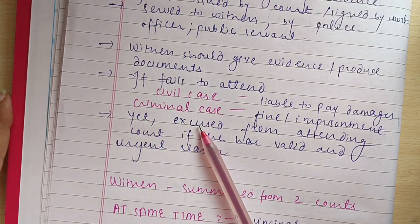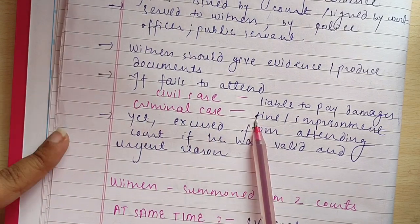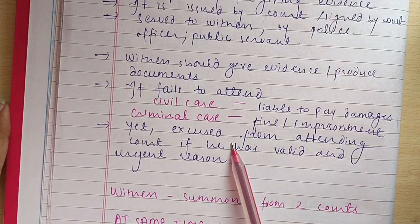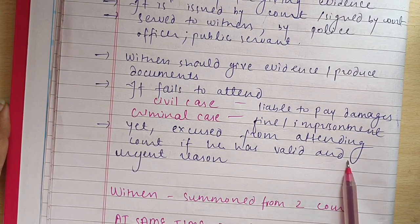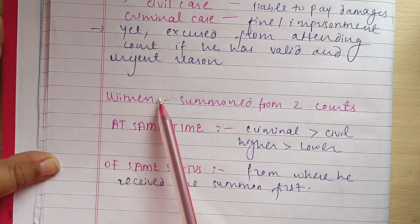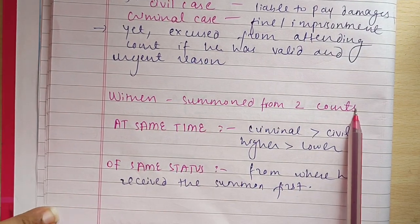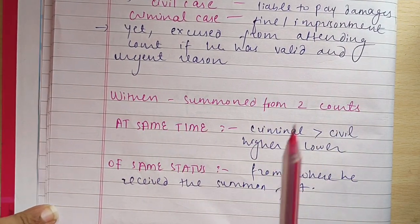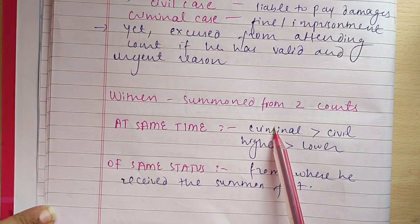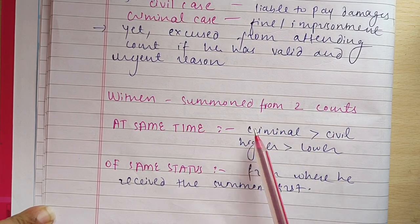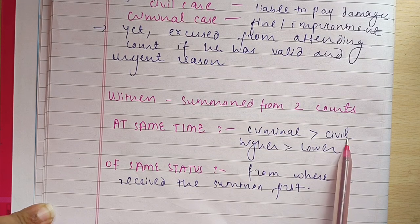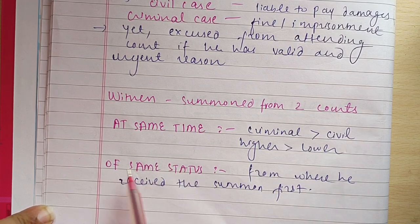There are some excuses — a witness can be excused from attending the court if he or she has a valid or urgent reason. Regarding a return summon from two courts: if a witness is receiving summons from two courts at the same time, you have to first visit the criminal court and then the civil court, as the higher court is given more value.